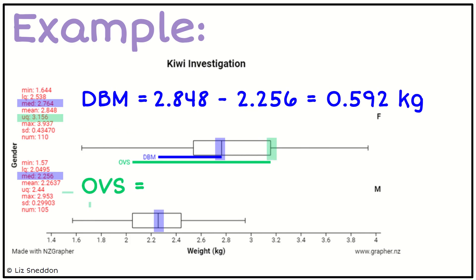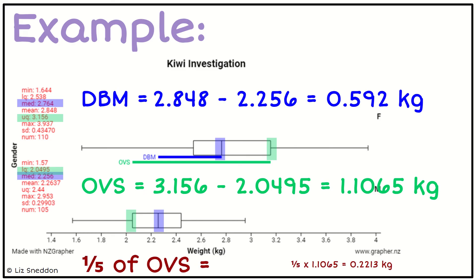To calculate the OVS, I'm going to find the biggest upper quartile and the smallest lower quartile. Those are the values I've highlighted there in green, and I subtract those to find that difference—there's my overall visual spread. Now I want to find one-fifth of the overall visual spread, so I'm taking that overall visual spread, the green one, 1.1065, and multiplying that by one-fifth, which gives me a value of 0.2213.